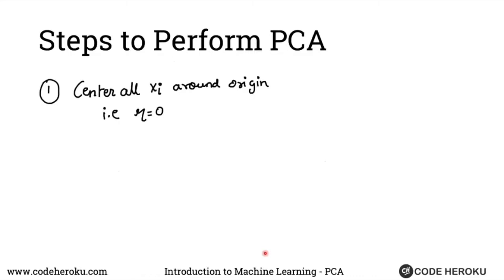Here are the steps to perform PCA. First, we will center all our XIs around the origin so that our math becomes much easier down the ground. We will center all our data points around origin, scaling all our data points so that their mean is zero.